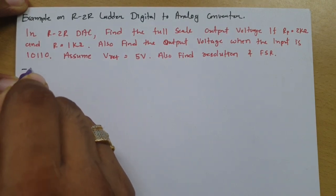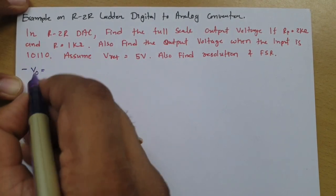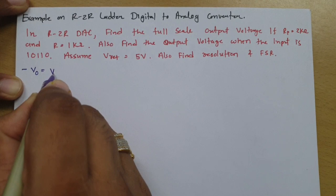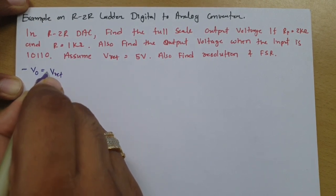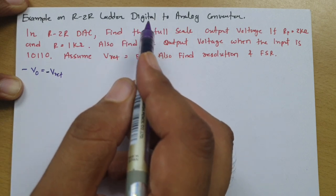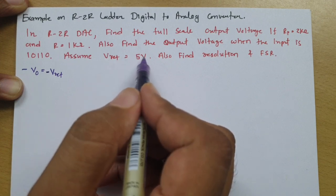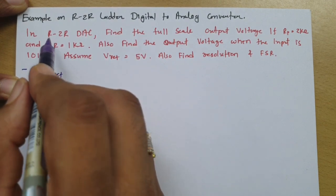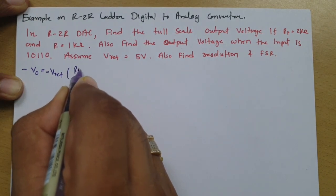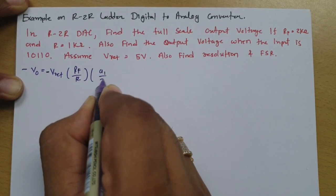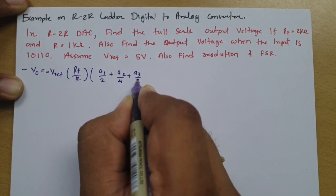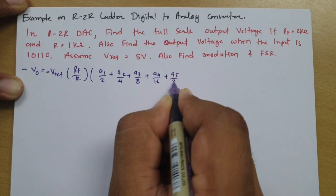First, we should know the basic output voltage equation for the R2R DAC. If you observe the output voltage equation, V reference is actually considered as negative V reference. So here I need to place a negative sign. In this video we were considering output voltage to be positive, but technically if V reference equals positive 5, then the resultant output will come out negative as per R2R DAC. So output voltage is: minus V_ref into (RF/R) into (A1/2 + A2/4 + A3/8 + A4/16 + A5/32).